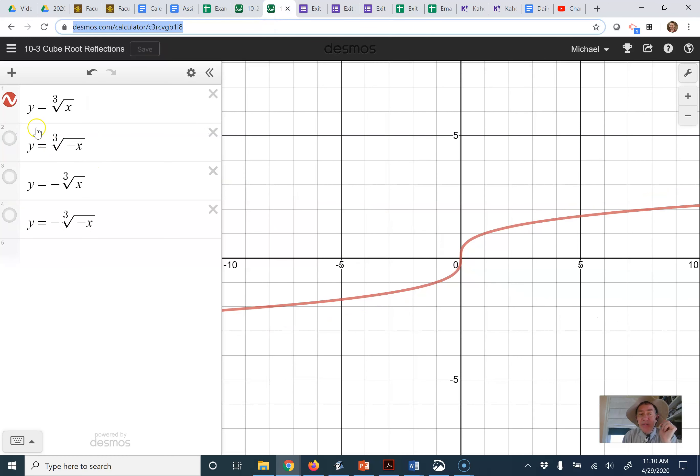Cube roots, on the other hand, are kind of interesting. There's your parent function. If you take it and make the x's negative, if you flip the x's, it flops over that way. And so the x is negative, the point that was 8, 2 is now negative 8, 2.